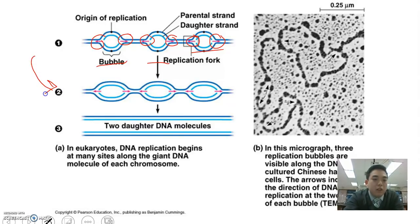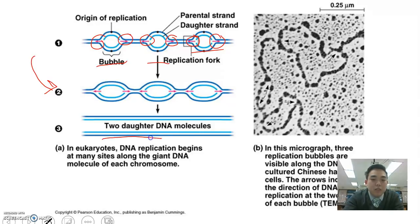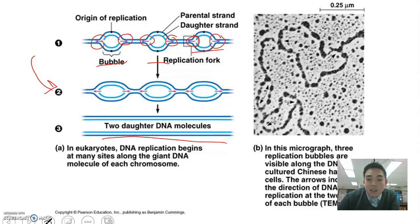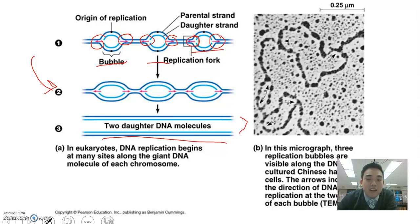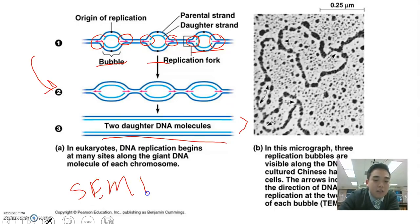Looking at number two here, the replication bubble is going to get bigger and bigger until they all meet and two daughter DNA molecules are formed. When talking about DNA replication, it's actually called a semi-conservative model. That is semi-conservative because in each of the two DNA molecules made, there is one parent strand still found in each of them. Since each parent strand is still conserved, and it's only one out of the two, we call it semi-conservative.